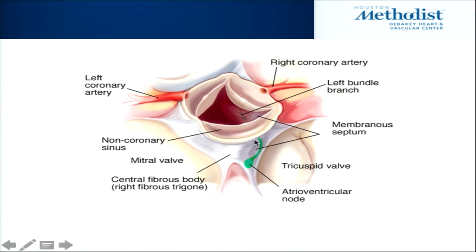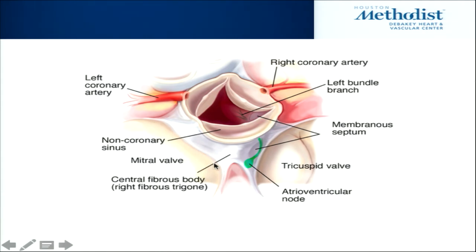Through that area of the right fibrous trigone runs the atrioventricular node, which is relevant as you will see. Here in a cutaway view, the aortic valve is seen with the right and left coronary arteries coming off. You've got the mitral valve curtain with the inter-leaflet triangle, and the tricuspid valve with the septal leaflet attached here.